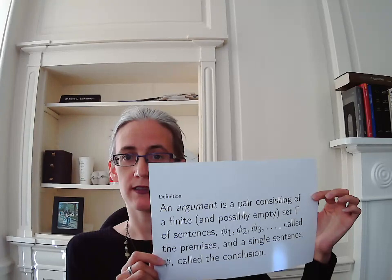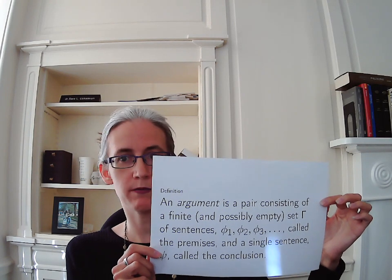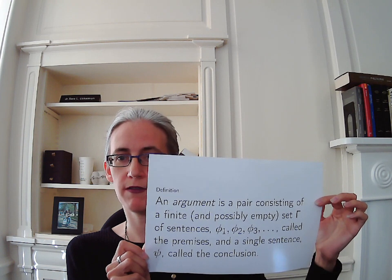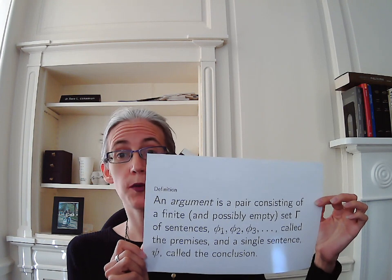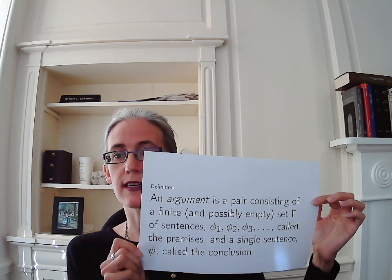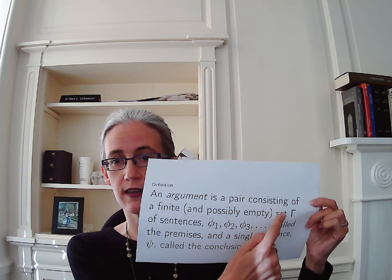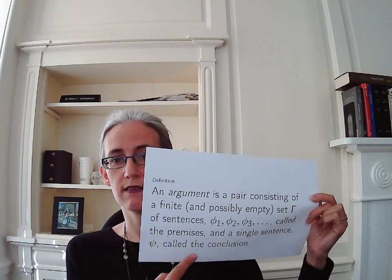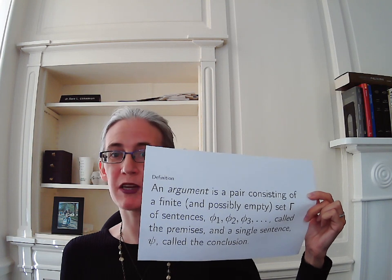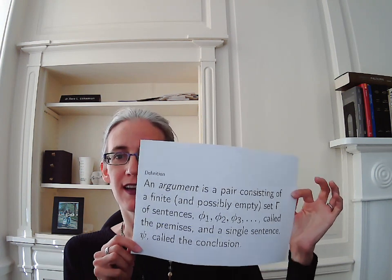Our second definition — and I have this written up — is that an argument is a pair consisting of a finite, possibly empty, set gamma of sentences phi-1, phi-2, phi-3, and so on. These are called the premises, and the second half of the pair is a single sentence, psi, called the conclusion. If you don't recognize these symbols — gamma, the phi's, and psi — don't worry, because the next video is going to be all about notation. For the time being, ignore the symbols and think of arguments as collections of sentences of which we put a whole bunch together on one side and say these are our premises, and one designated sentence: this is our conclusion.